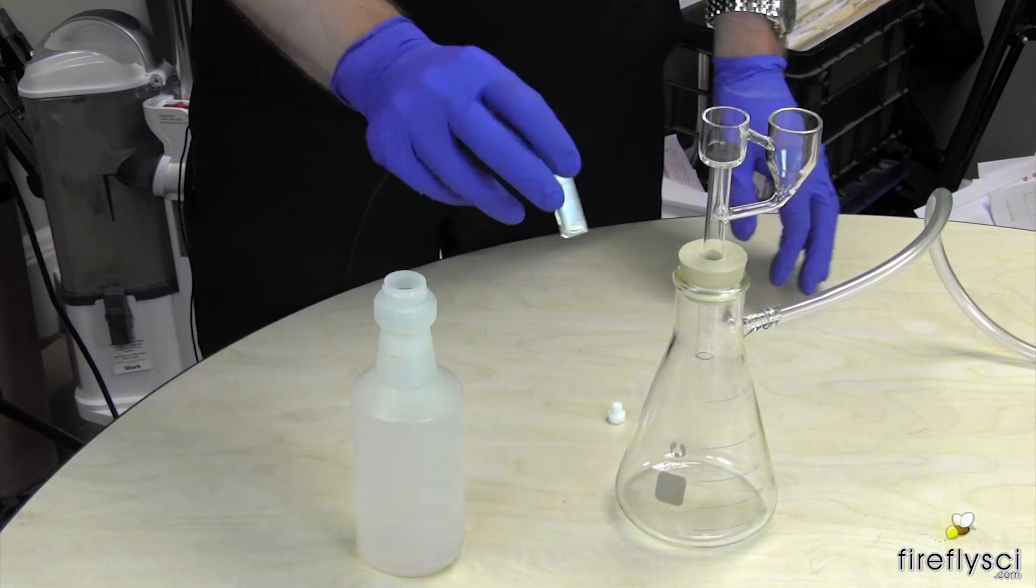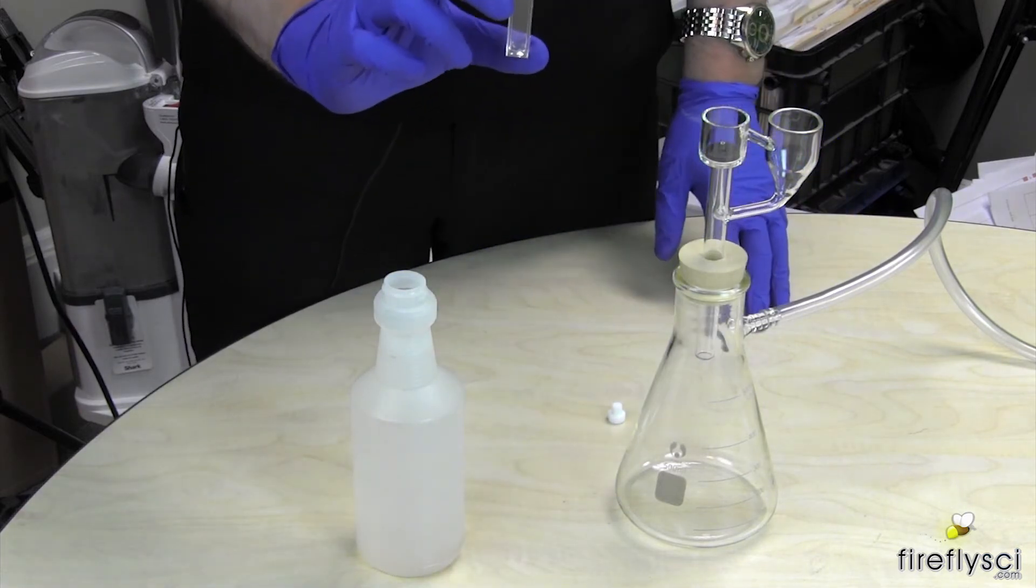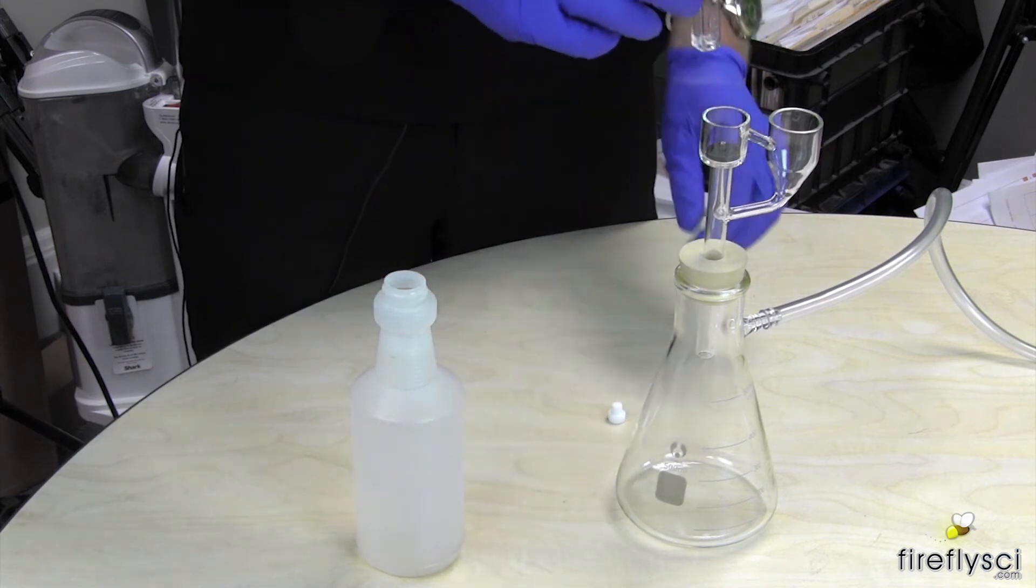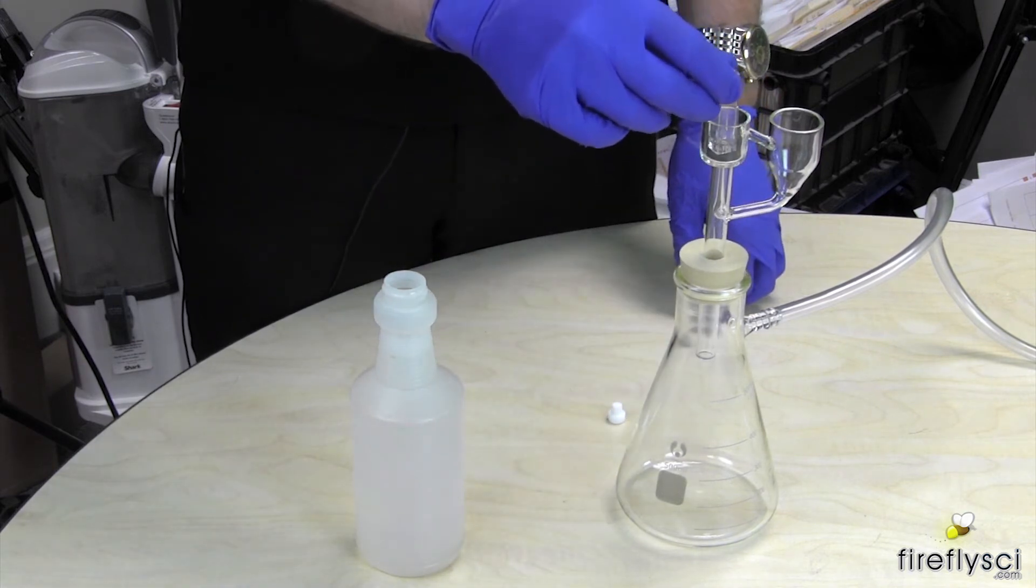Okay, so I got my cuvette here all ready to be washed. So all you have to do is flip the cuvette upside down, put it right on top of the black gasket.